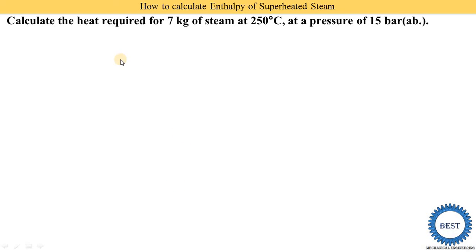First we understand the problem statement. Calculate the heat required for 7 kg of steam at 250 degrees centigrade at a pressure of 15 bar. Here both temperature and pressure are given.